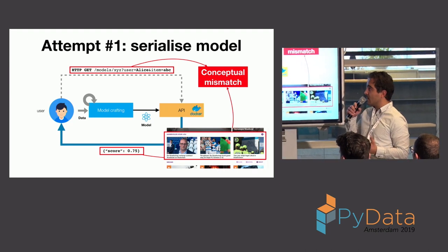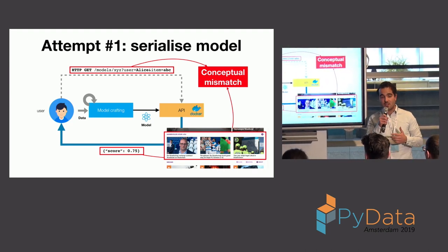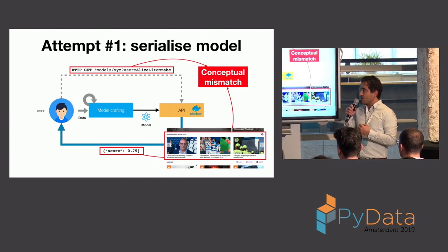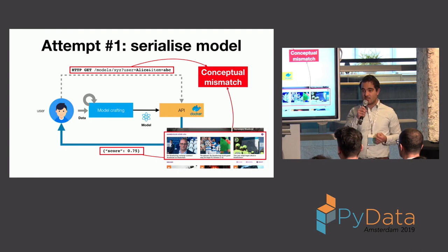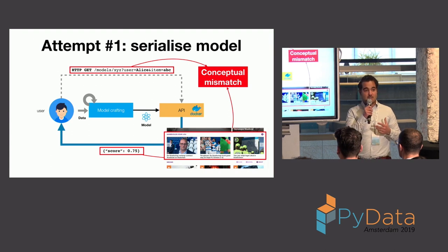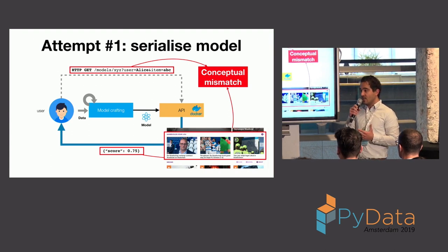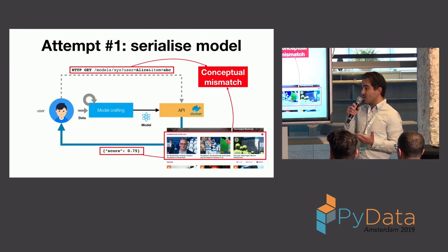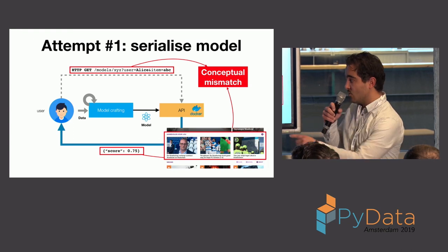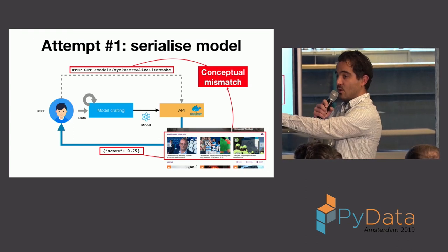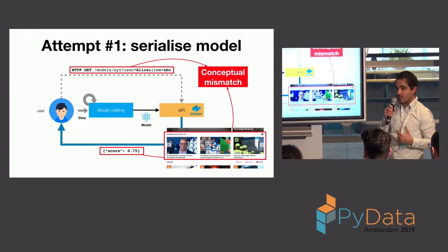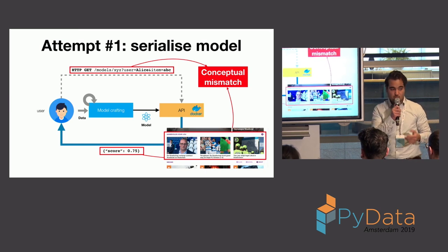I mean, that sounds very reasonable, but there's a big problem with this approach. And, actually, the big problem is that there's a conceptual mismatch. So, if I put my model online in this way, and I have a collaborative filter, I'm not really going to get a list of recommendations back. What I'm going to get back is a probability that this user and item combination is considered relevant. A prediction that this user will find this item relevant.